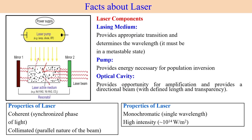This complete system is called the resonator. In a laser system, the lasing medium provides appropriate transitions and determines the wavelength — it must have a metastable state. For example, Nd:YAG solid laser and CO2 laser have different wavelengths depending on the lasing medium. The pump provides energy necessary for population inversion — to excite the lasing medium. The optical cavity provides the opportunity for amplification and produces a directional beam.